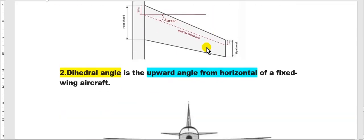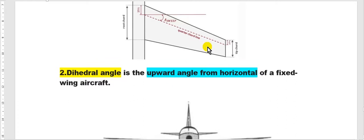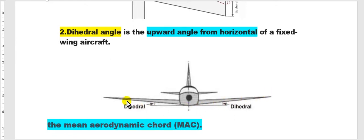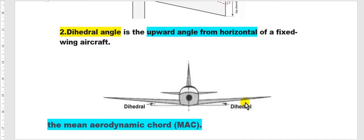The other angle is the dihedral angle. It is measured between the horizontal plane and the lower surface of the wing. This is the dihedral angle.